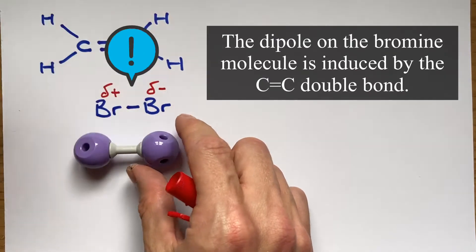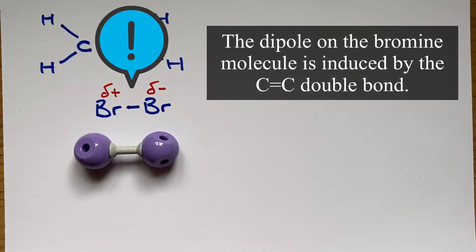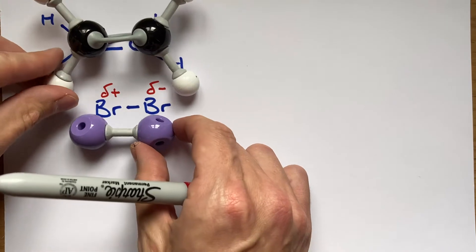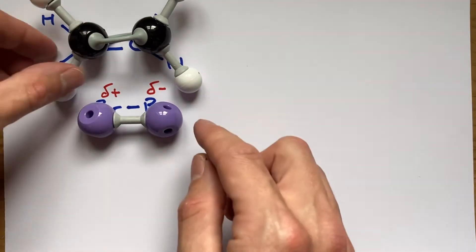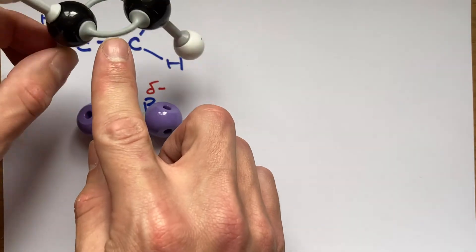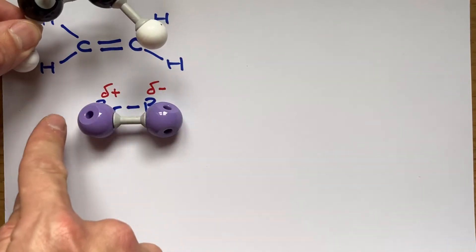Before we can start putting curly arrows on things, our bromine molecule needs a dipole because it's naturally a non-polar molecule. The dipole on the bromine molecule is induced by the high electron density between the two carbons in the double bond.